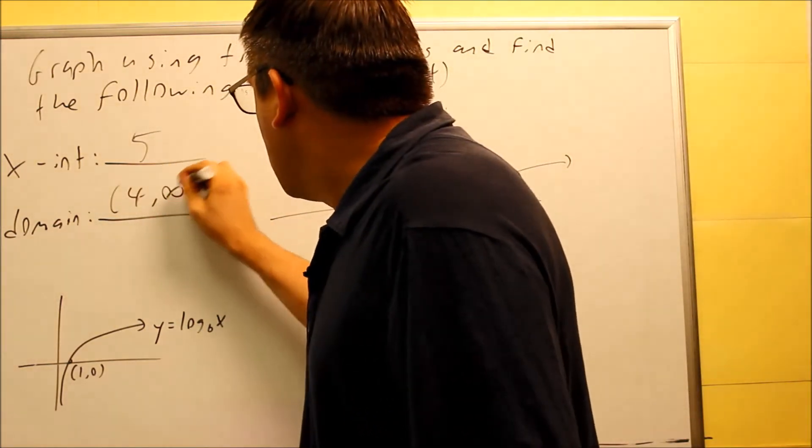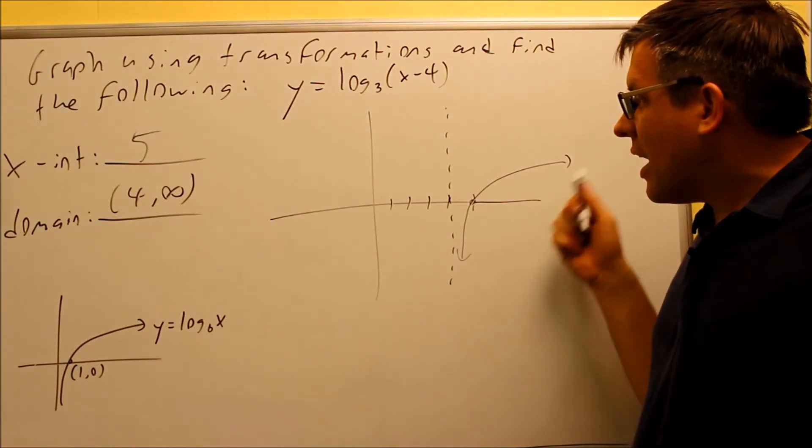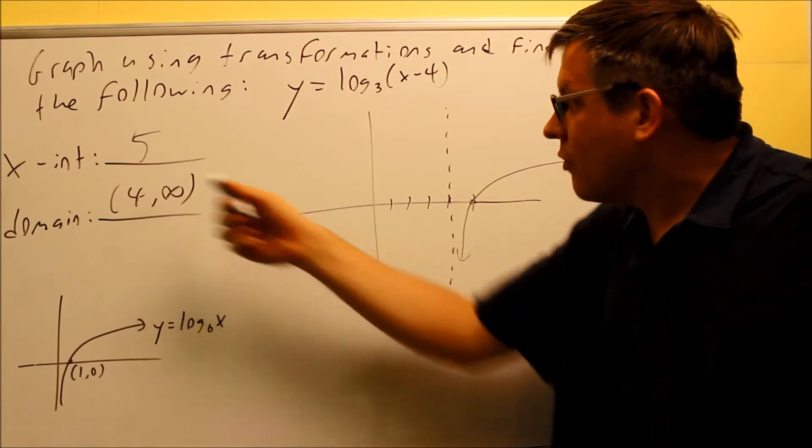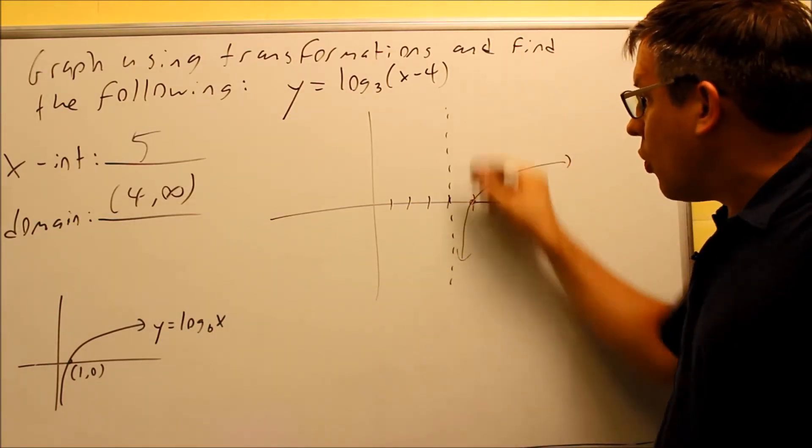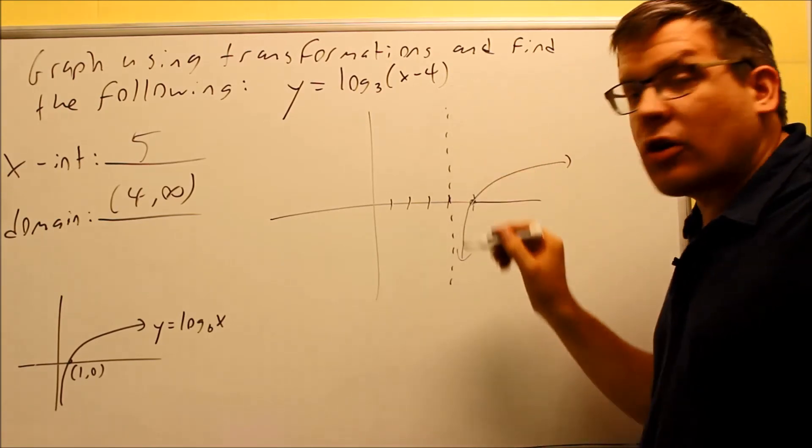So we can just put four to infinity as our domain. Again, that would describe all the x values that are used. Notice here I'm using a parenthesis on the interval instead of a bracket because we don't want to include that. The graph is never actually going to reach the vertical asymptote.